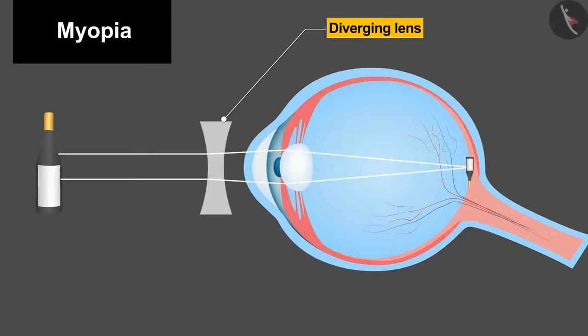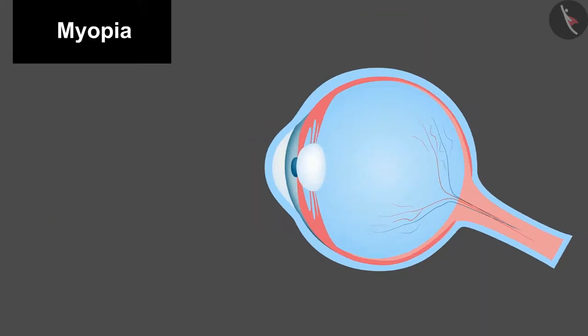The second defect, which is also known as farsightedness or hypermetropia. A person with hypermetropia can see distant objects clearly but finds it difficult to see nearby objects distinctly.